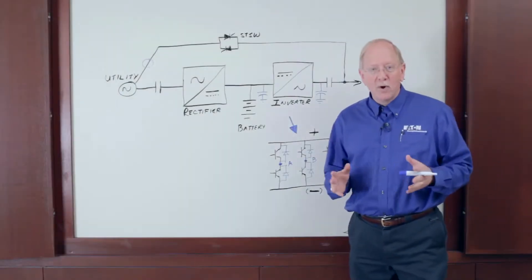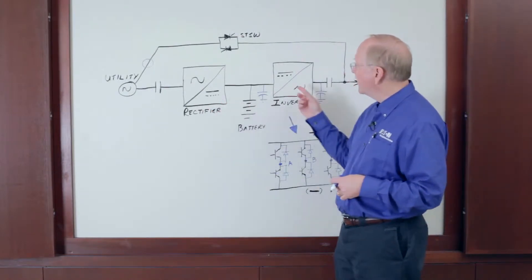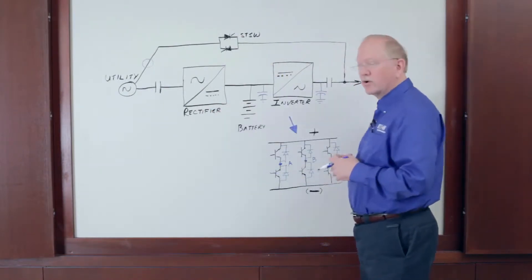So on the board here, we have a one-line diagram of a traditional double conversion UPS. The rectifier, the inverter, the static switch, and the critical bus output.